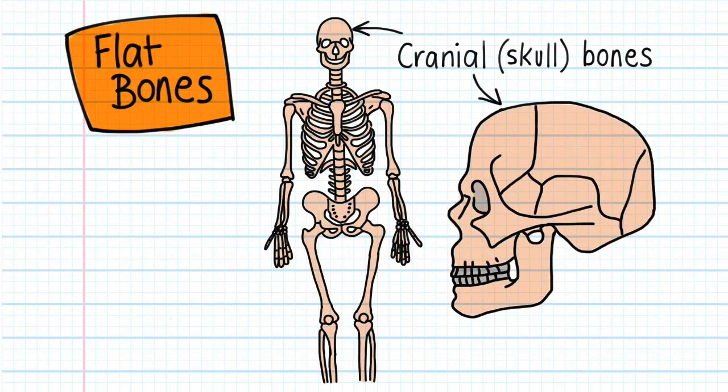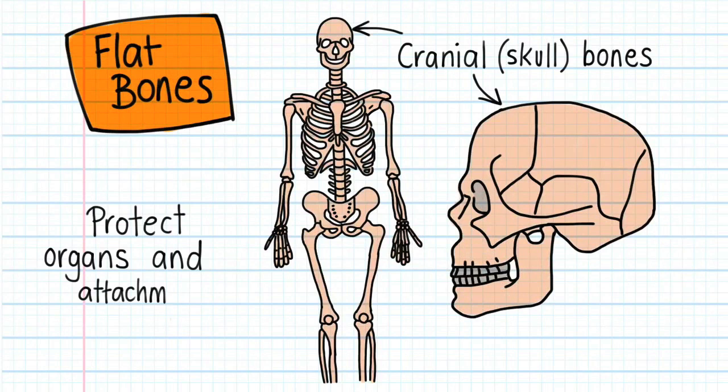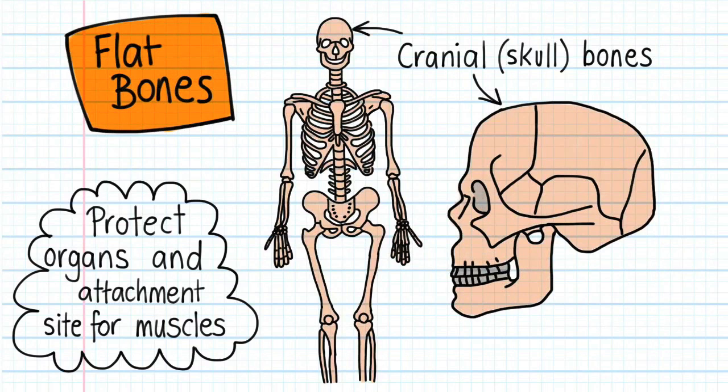Flat bones surround and protect organs. For example, the cranial bones protect the brain and the ribs and sternum protect the heart and lungs. Flat bones also provide a large surface area for muscle attachment.